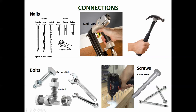A carriage bolt works differently — you drill a hole and hammer this side in. It has a square shape beneath the head, so when hammered into the hole it punches a square recess in the timber. Then you just tighten the washer and nut on the other side. The advantage is it gives a clean finish, though if you overtighten it can start to rotate.